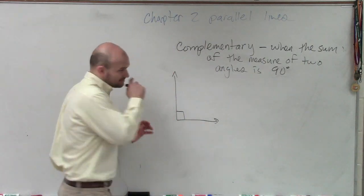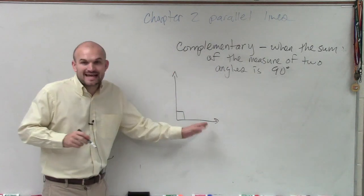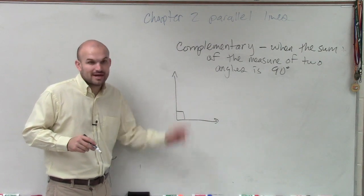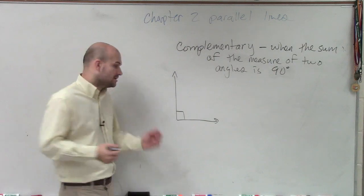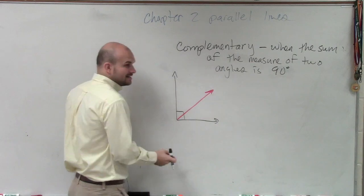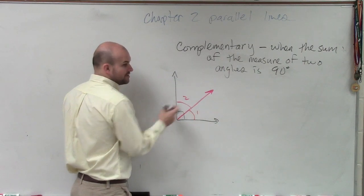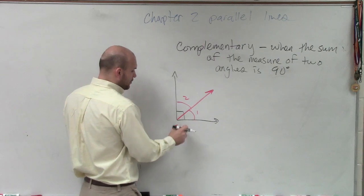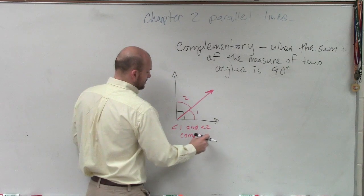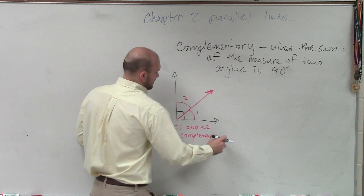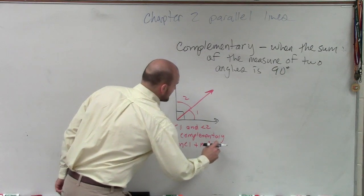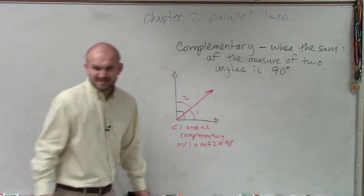So therefore, if I cut this angle into two angles, then we know those two angles are going to be complementary. If I draw a line like this, I've broken this down into two angles, one and two. Angle one and angle two are complementary because the measure of angle one plus the measure of angle two equals 90 degrees.